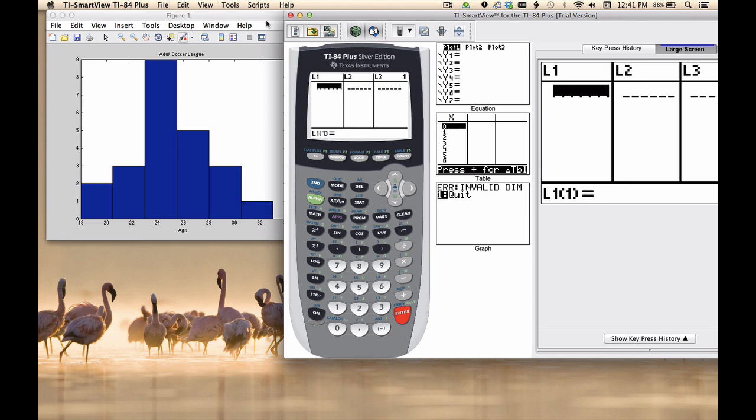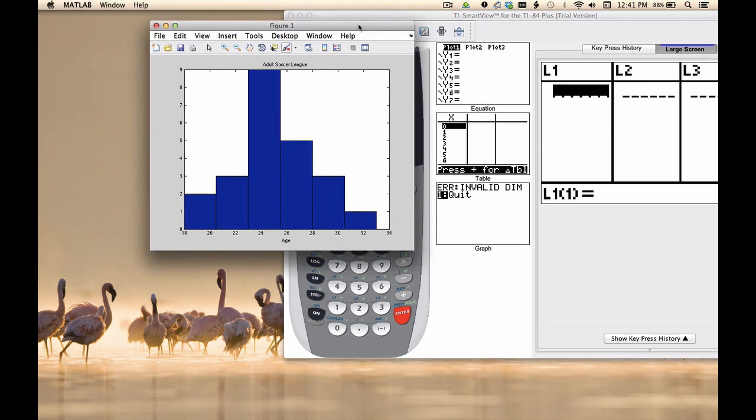Let's take a look at estimating mean and standard deviation from a histogram. This histogram shows the distribution of age among players on an adult soccer league. The distribution is unimodal and pretty symmetric, and the mean is probably a little bit more than 24 years.